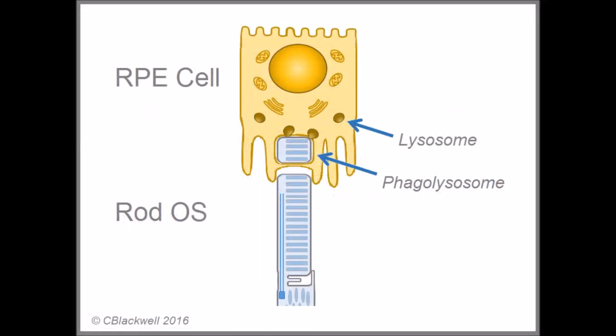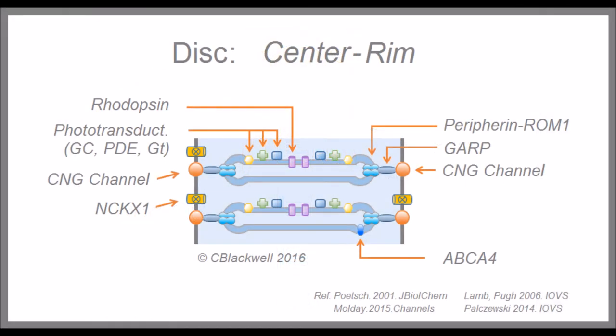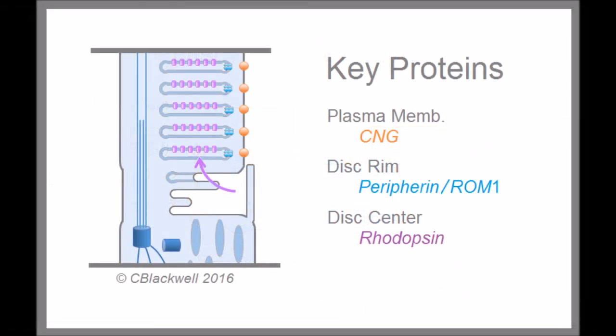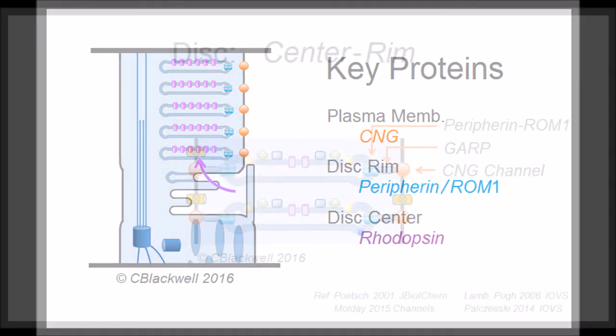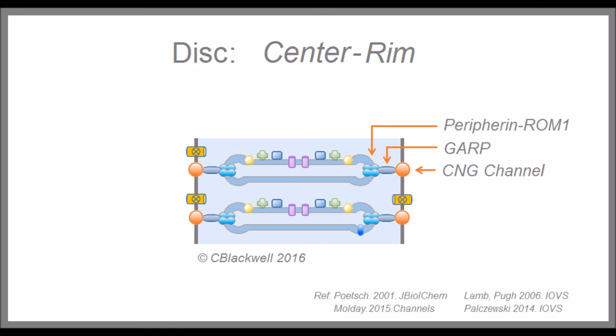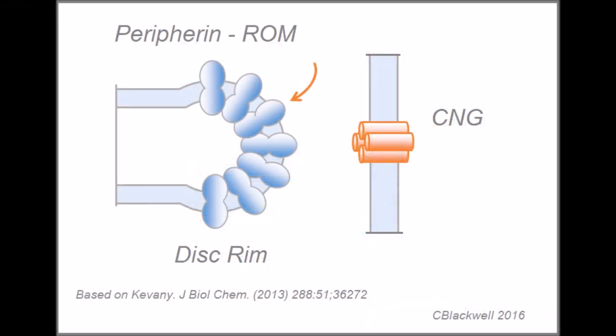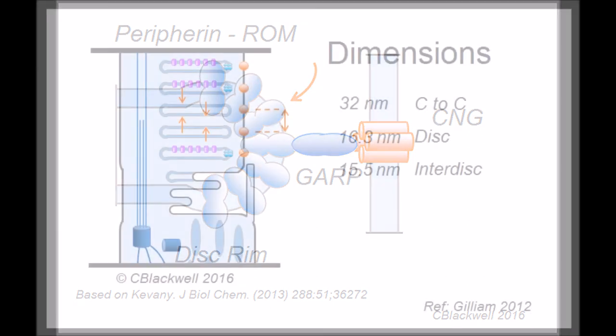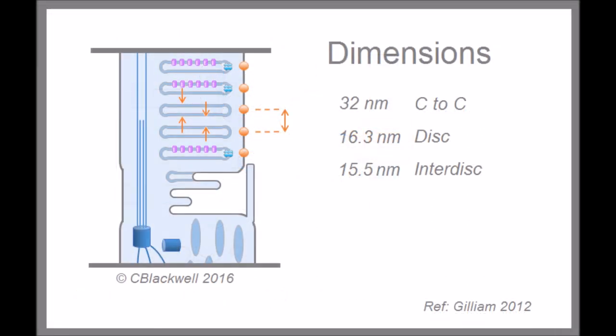When the discs reach the top of the outer segment, they are engulfed and digested by the RPE cells. Looking more closely at the disc, there are multiple important proteins in the disc and their location is specific and important. Rhodopsin occupies the center of the disc, while peripherin and ROM1 join in a complex that is required to form the rounded edge of the disc. The peripherin-ROM complex also forms a connection with the CNG channels, which helps maintain the very regular disc position and spacing.